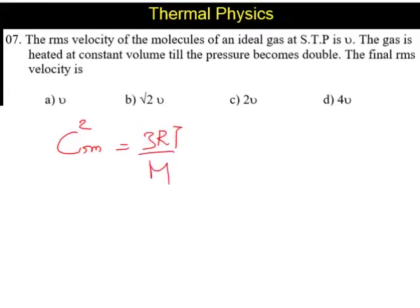But we know from gas law, PV equals RT for one mole of a gas. So using that idea we can say C_RMS is equal to √(3PV/M).